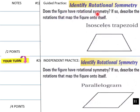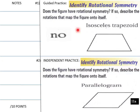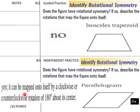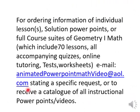Guided practice — teachers, give your students five minutes. Does the figure have rotational symmetry? We have a parallelogram and an isosceles trapezoid. Welcome back: no, trapezoids don't have rotational symmetry. Yes, the parallelogram can be mapped onto itself by a clockwise or counterclockwise rotation of 180 degrees about its center — flipping it 180 puts each corner in its new position.